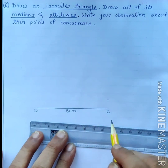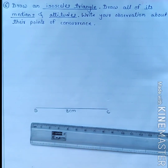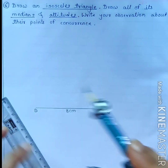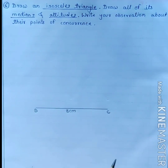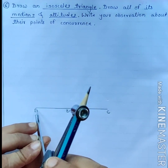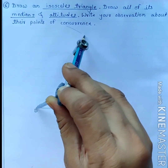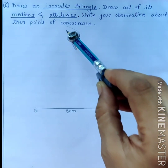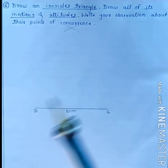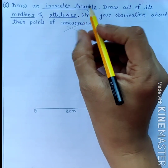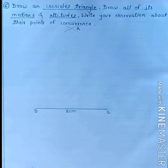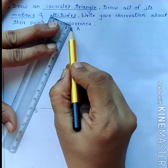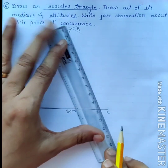We have drawn segment BC as the base with a length of 8 cm, and the congruent sides will be of length 10 cm. To draw the isosceles triangle, keep your compass on endpoint B and draw an arc. Then without changing the radius, keep the compass on point C and draw another arc intersecting the first arc. Name this intersection point A, then join AB and draw segments AB and AC.